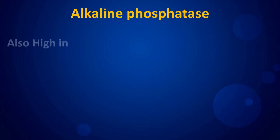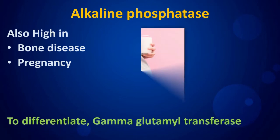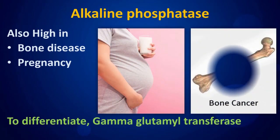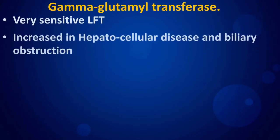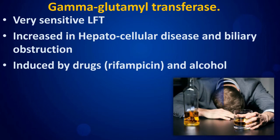Alkaline phosphatase is also elevated in bone disease and pregnancy. Gamma-glutamyl transferase (GGT) is a very sensitive liver function test. It is increased in hepatocellular disease and biliary obstruction, and is also induced by drugs and alcohol.